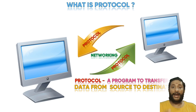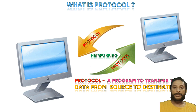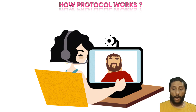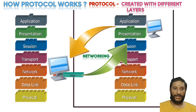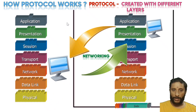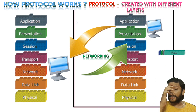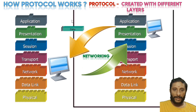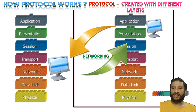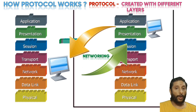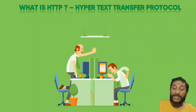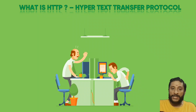This communication happens via a concept called a protocol. A protocol is a program, and this program takes responsibility for transferring data from source to destination. The protocol works in multiple layers. As data moves from one computer to another, at each layer additional information about the computers is added, and then that is removed at the other end so that the final data reaches the destination.